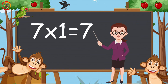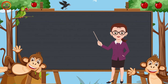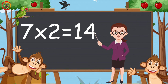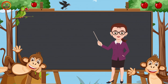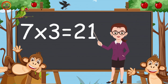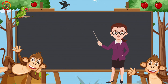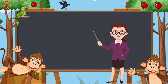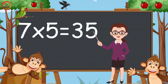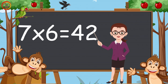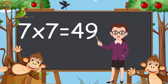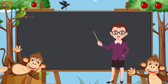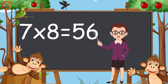Seven ones are seven. Seven twos are fourteen. Seven threes are twenty-one. Seven fours are twenty-eight. Seven fives are thirty-five. Seven sixes are forty-two. Seven sevens are forty-nine. Seven eights are fifty-six.